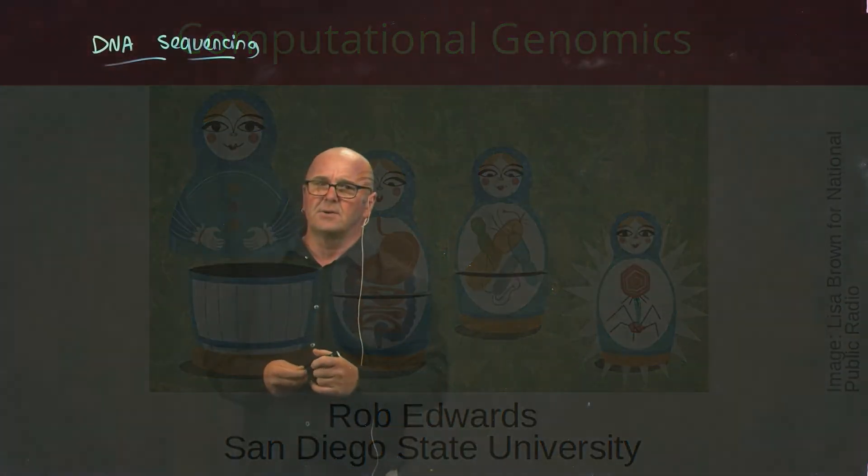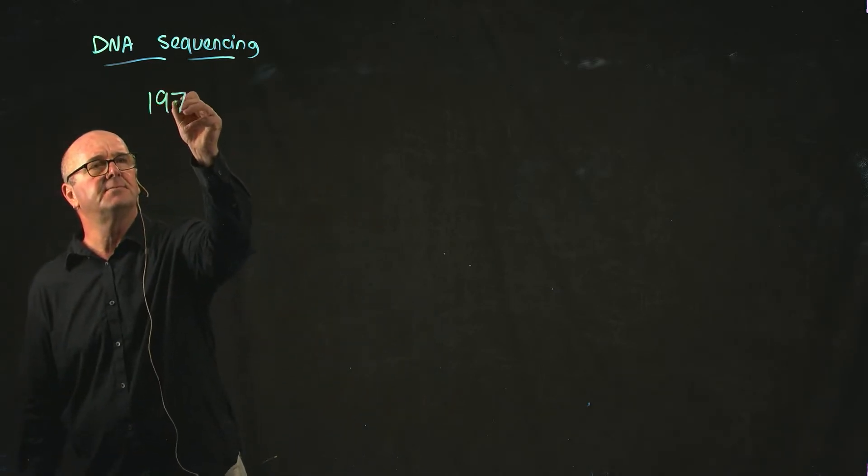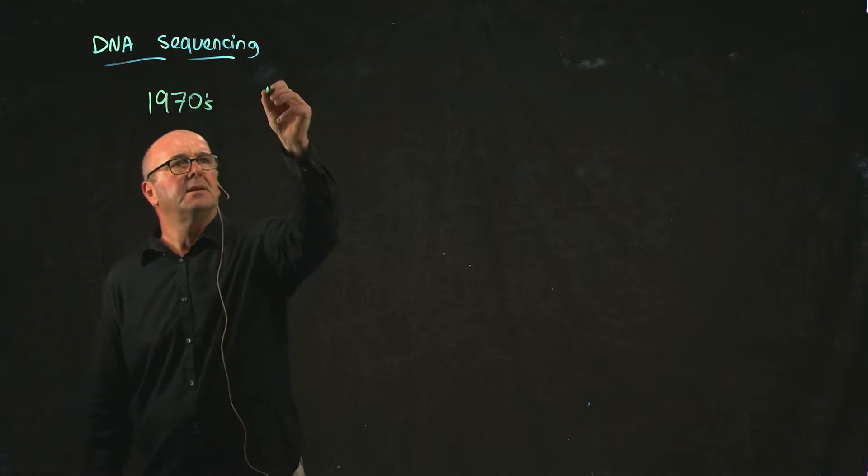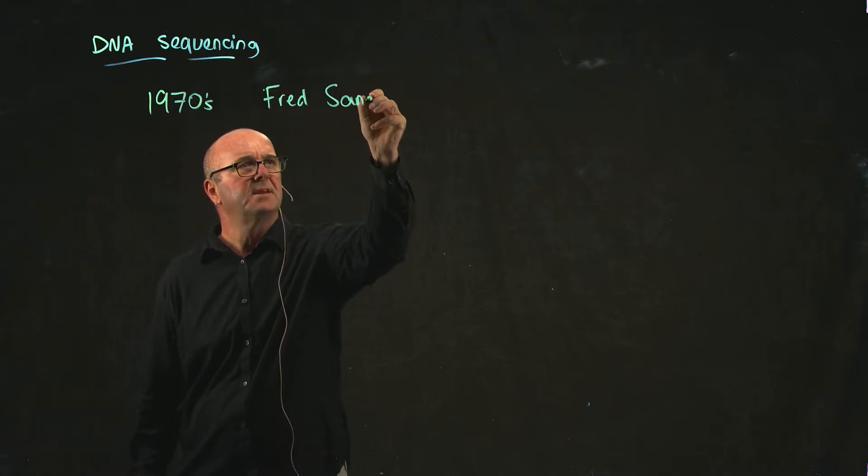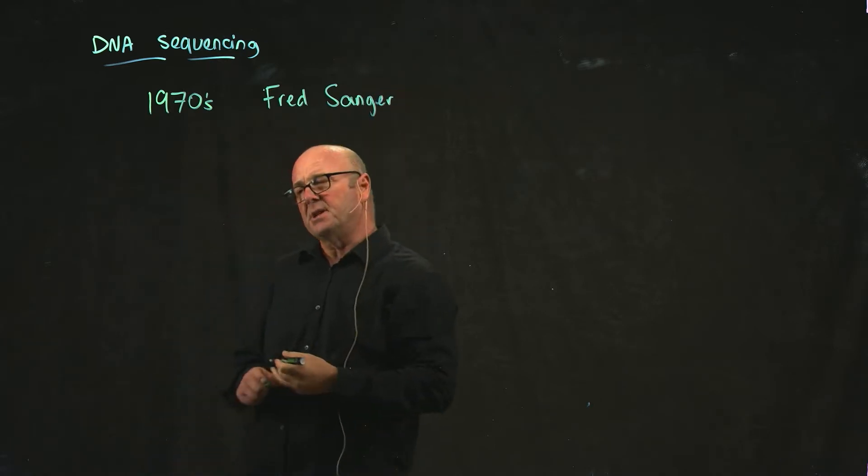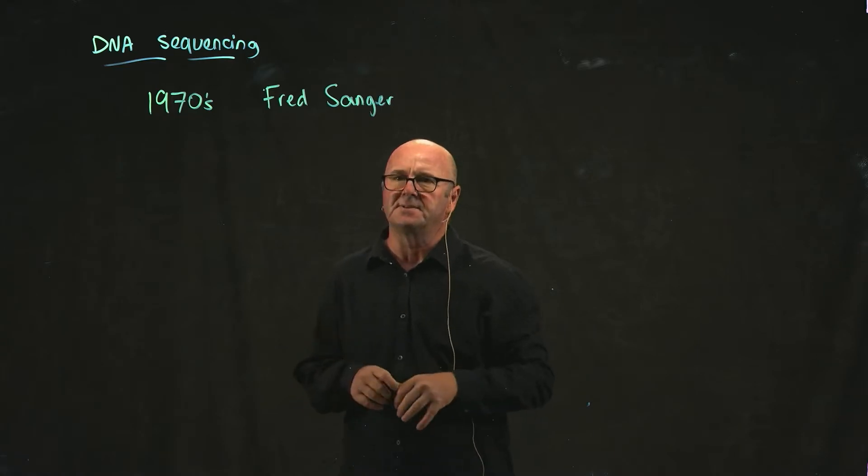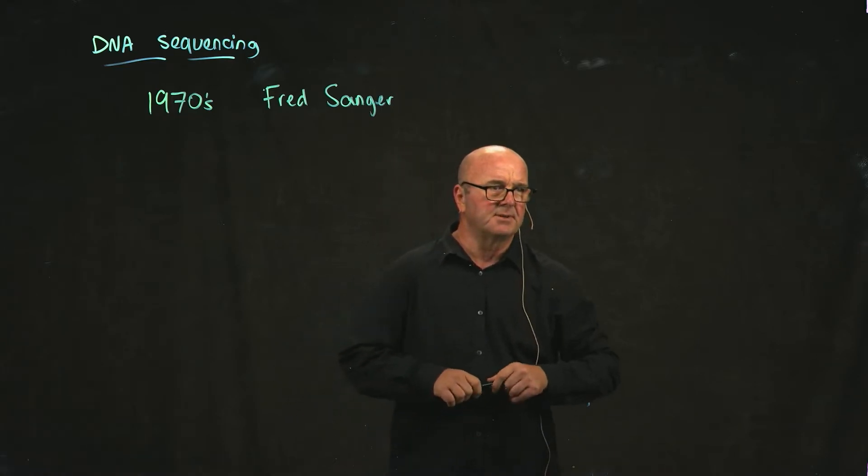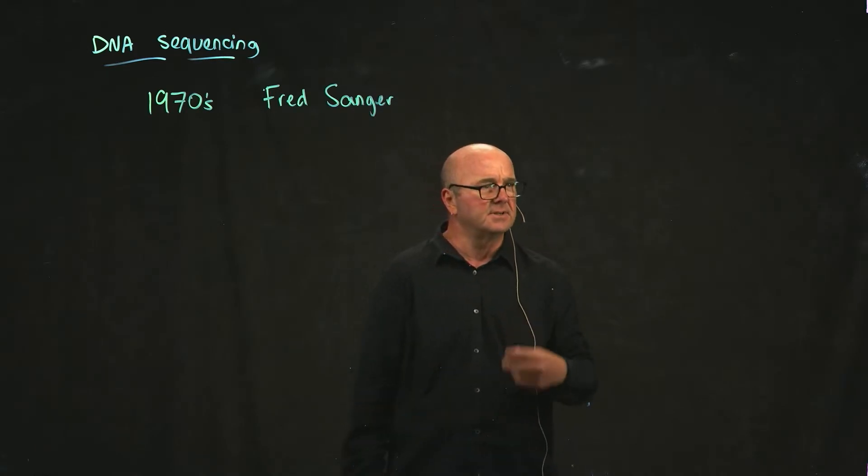Sequencing started quite a while ago in the 1970s. A professor called Fred Sanger, who is really quite a remarkable man, he's one of only two people that have won two Nobel Prizes for two different discoveries, which is a pretty amazing feat. I mean, to win two is phenomenal.